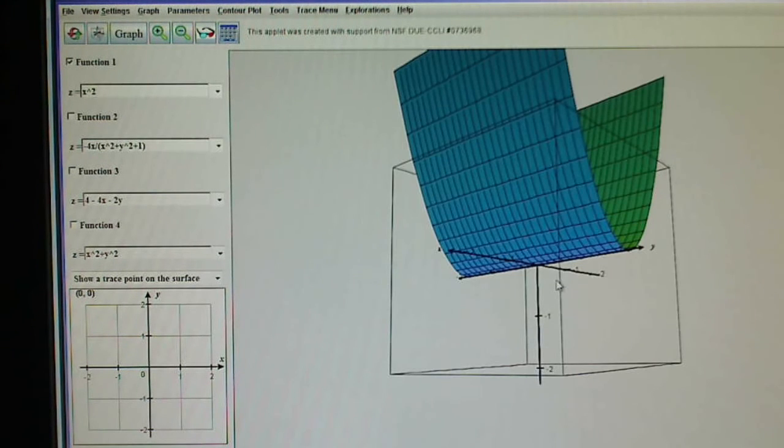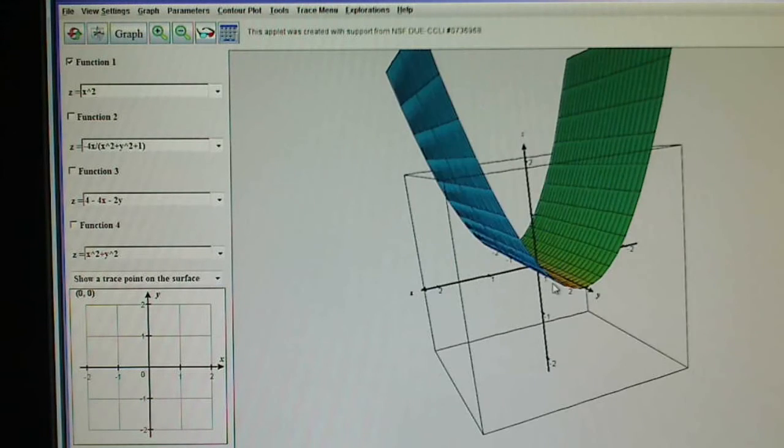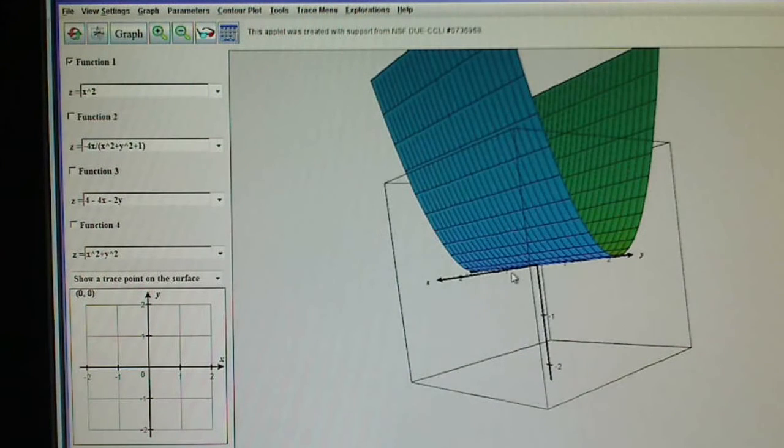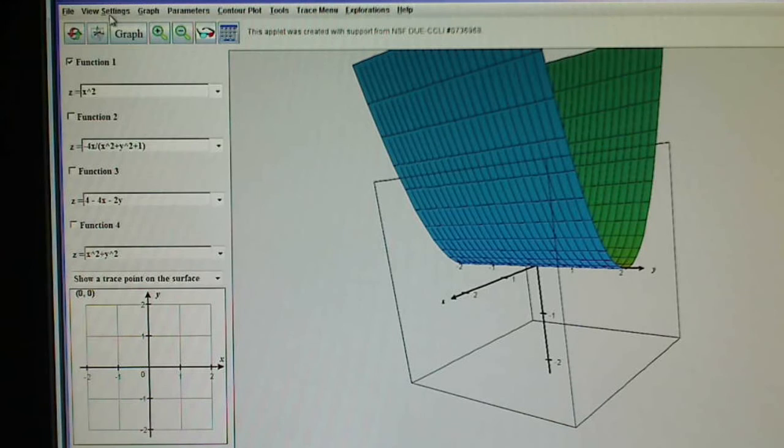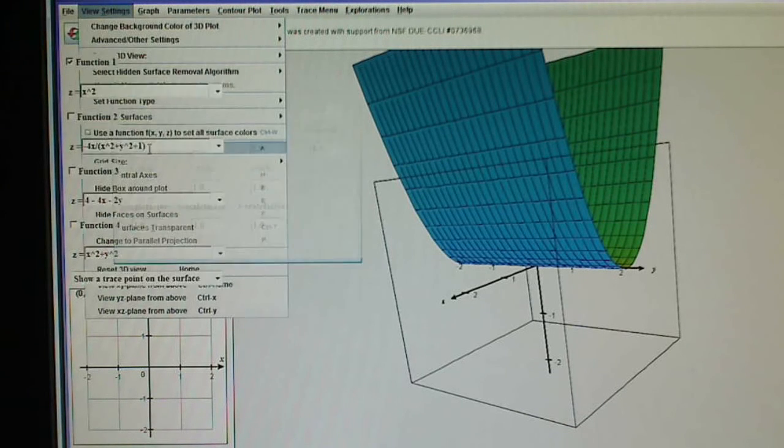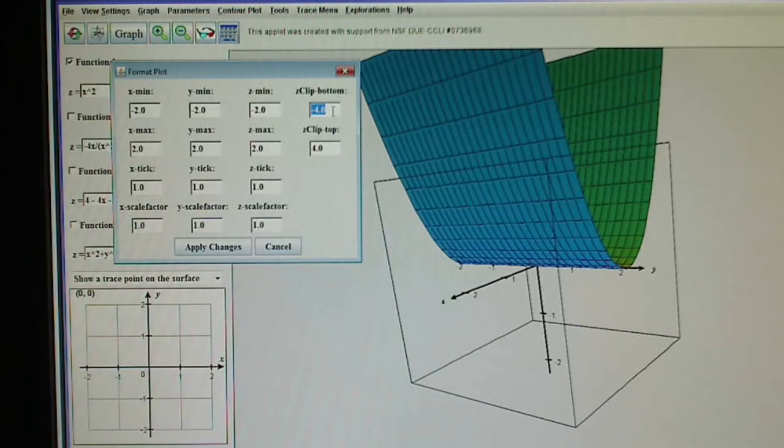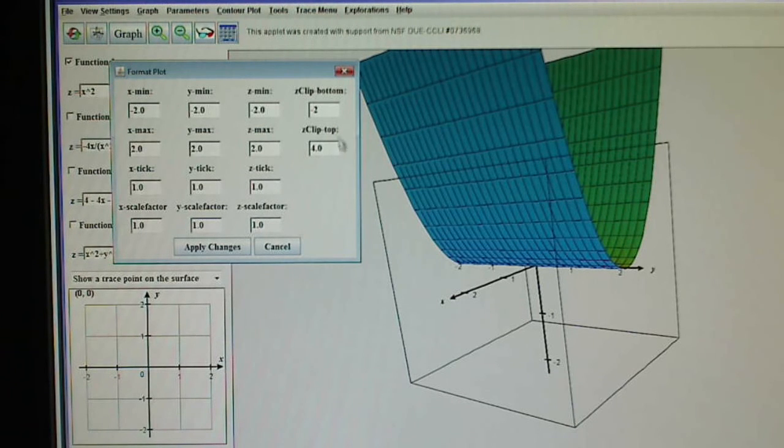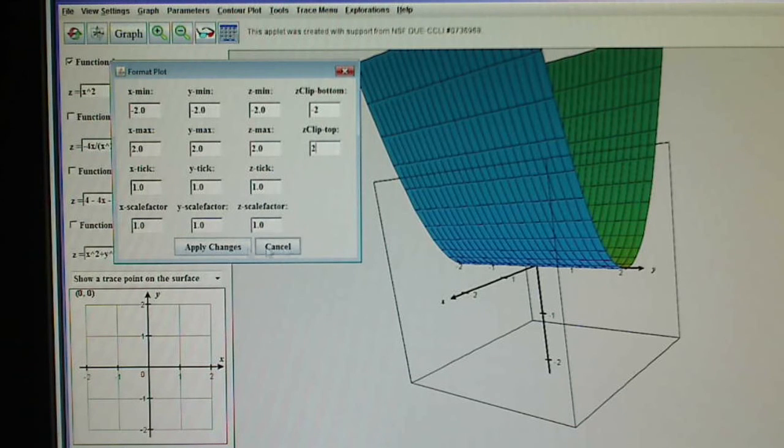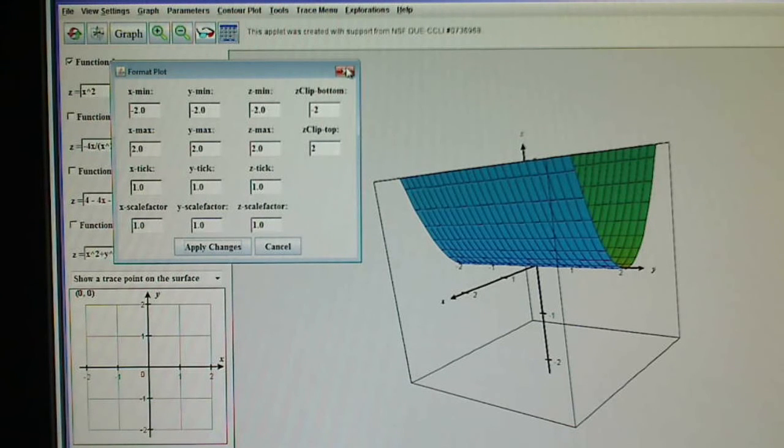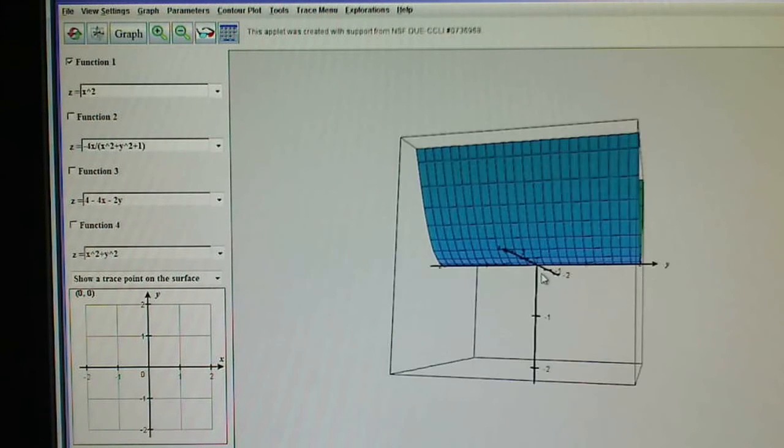Now again I don't like how it goes above like that. I don't prefer that look so I'm going to go to view settings, format axes and I'm going to clip it on the top and on the bottom. I'm just going to leave it at 2, minus 2 to 2 for the clip. Apply changes and now it looks like it's going to sit in the window.